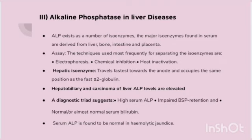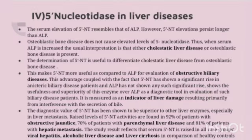The serum elevation of 5'-nucleotidase resembles that of ALP; however, 5'-nucleotidase elevations persist longer than ALP. Osteoblastic bone diseases do not cause elevated levels of 5'-nucleotidase. Thus, when serum ALP is increased — where the usual interpretation is either cholestatic liver disease or osteoblastic bone disease — determination of 5'-nucleotidase is useful to differentiate cholestatic liver disease from osteoblastic bone disease, making it more useful than alkaline phosphatase for evaluation of obstructive biliary diseases.